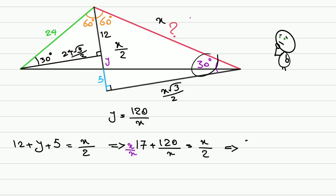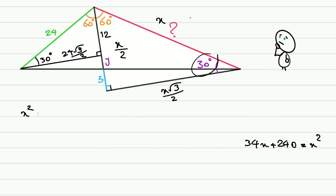Common denominator here, then cross multiply: 34 times x plus 240 equals x squared. Now we can rearrange it and solve it by quadratic formula, or let's try another way. So x squared minus 34 times x equals 240.